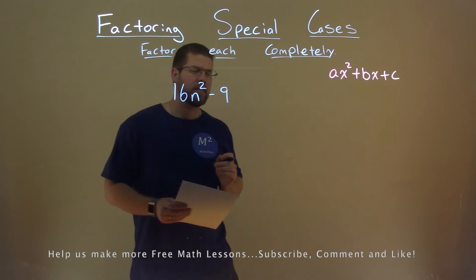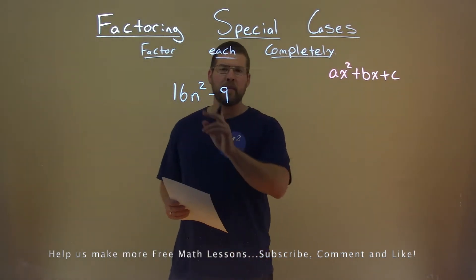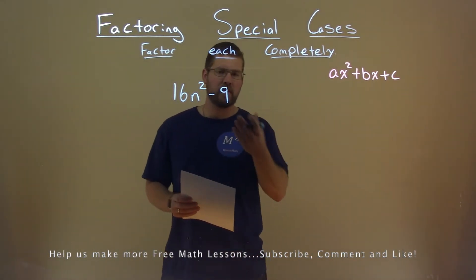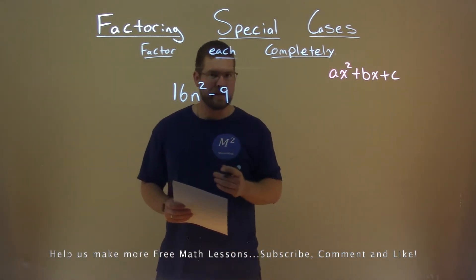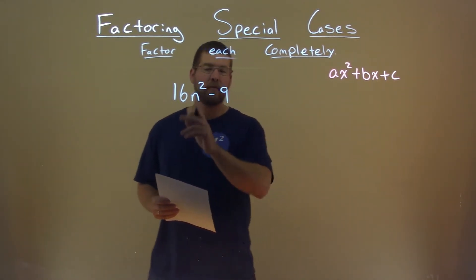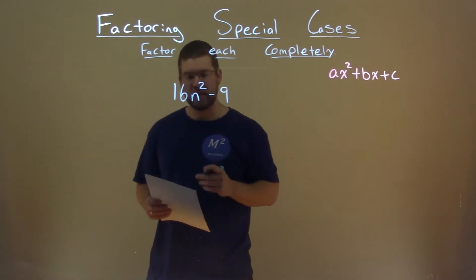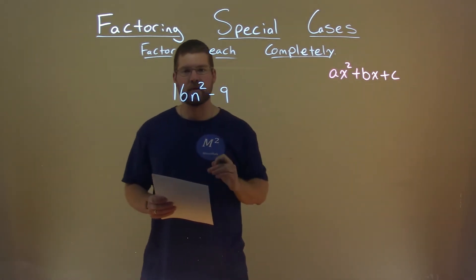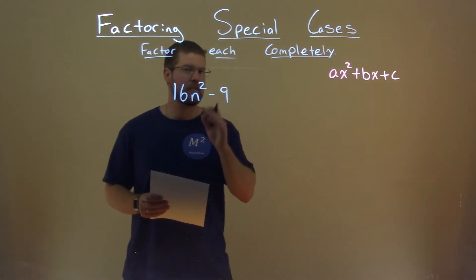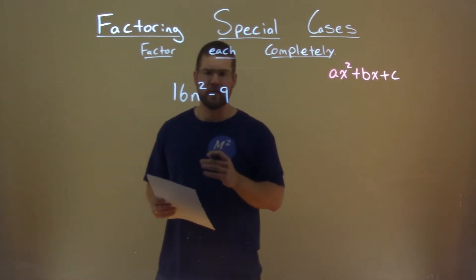One thing I noticed at first: my b value is 0 — it's not written. My a value is a perfect square, and my c value is a perfect square. So this is our special case here.